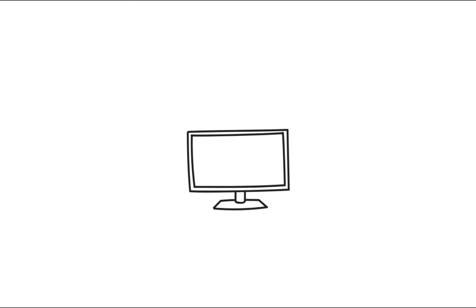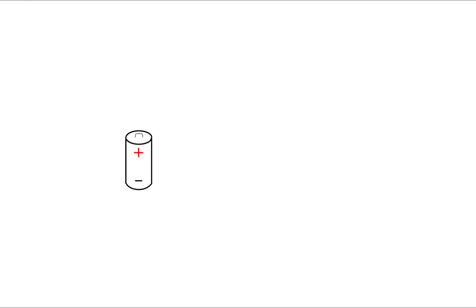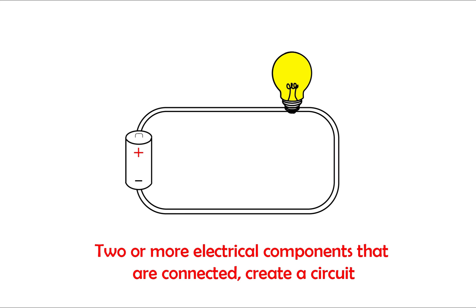It is the circuit inside each and every one of those machines that makes your routine what it is. But a circuit doesn't have to be a complex computer or a rocket. In fact, a simple battery connected to a light bulb is a circuit. Any two or more components connected electrically create a circuit.